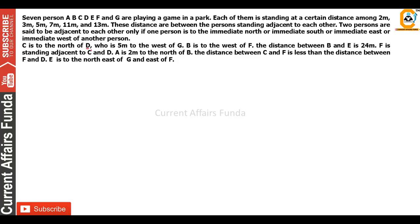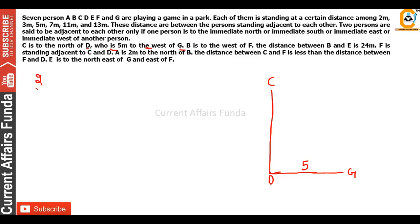C is to the north of D, who is 5 meters to the west of G. So C is north of D — we don't know that distance yet. D is 5 meters west of G, so they are in the east-west direction. G will be here and D will be 5 meters to its west. We have now used 5 from our set: 2, 3, 5, 7, 11, 13.